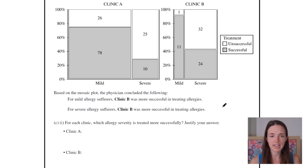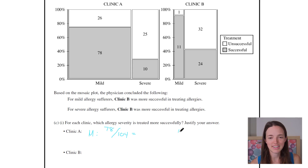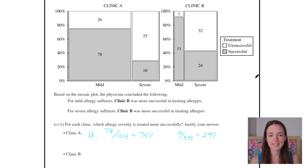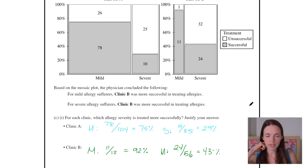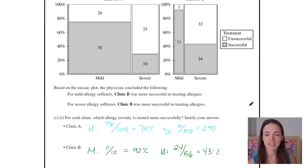For clinic A, mild: 78 out of 104, and 10 out of 35. So for mild, 75% were successful, and for severe, only 29% were successful. And then for clinic B, 92% of the mild cases were successful, and 43% of the severe cases were successful.